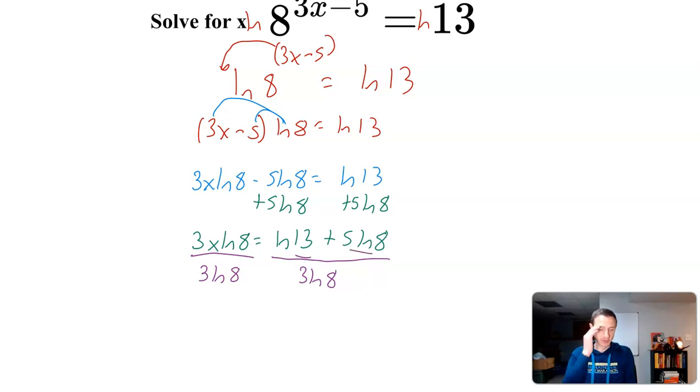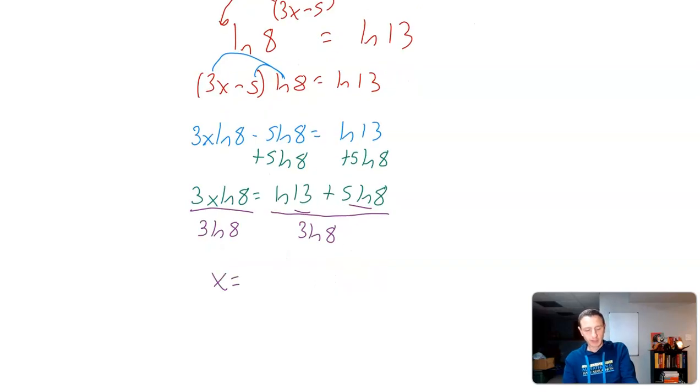Because going back to this step, I can't combine ln(13) and ln(8) as like terms or anything like that, so I just leave that alone. That means I have x, the 3s cancel, the ln(8)s cancel. So x = (ln(13) + 5·ln(8)) / (3·ln(8)).